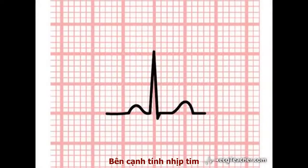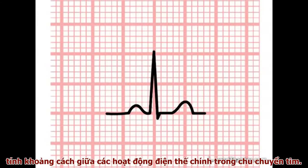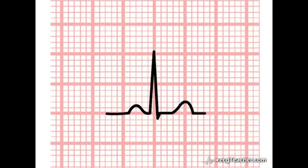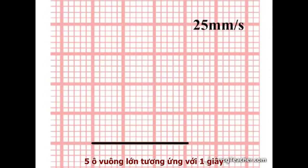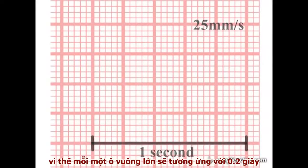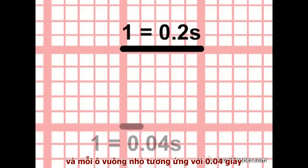In addition to calculating heart rate, the fact that distance on the ECG paper equates to time allows us to use the readout to time the duration of the major events of the cardiac cycle. At a standard recording speed of 25 mm per second, five large squares corresponds to one second. Therefore one large square corresponds to one fifth of a second, and one small square to 0.04 seconds.